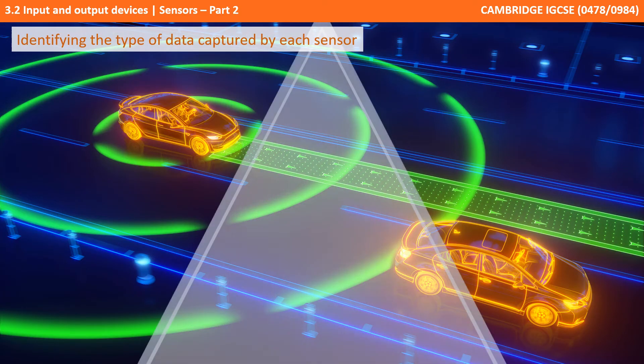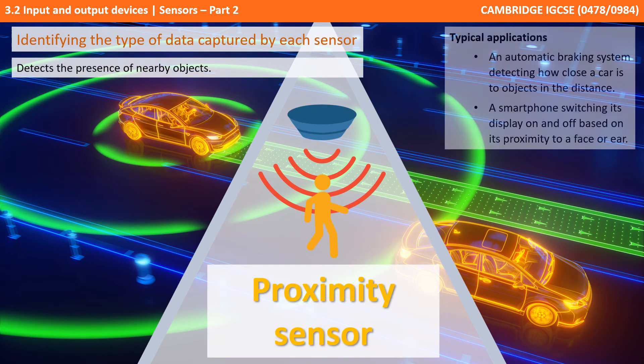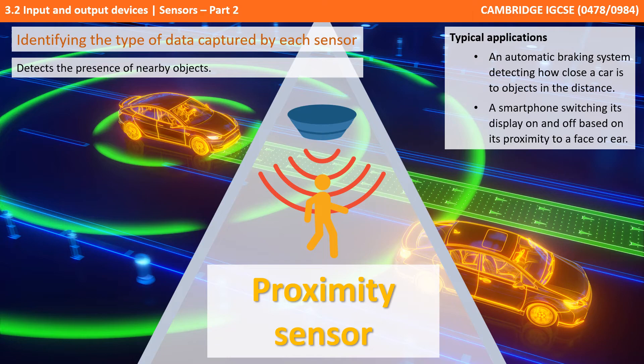The penultimate sensor is proximity, which simply detects the presence of nearby objects. Typical examples are detecting how close a vehicle is to other objects for automatic braking, and detecting when a face is close to a mobile screen, switching off the screen when the phone is held up to the ear.